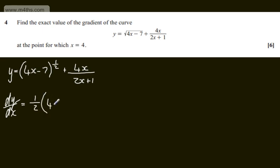I rewrite the inside function, I drop the power by 1 which will be minus 1 half, and then multiply through by the derivative of the inside function. The derivative of 4x minus 7 is 4.